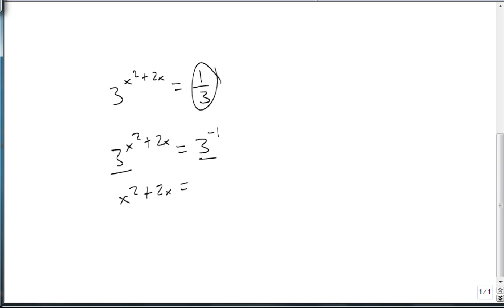we take the x squared plus 2x, set it equal to minus 1, add 1 to both sides to make it equal 0. And then this factors as x plus 1 quantity squared, so x is minus 1.